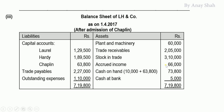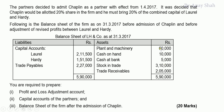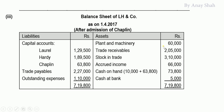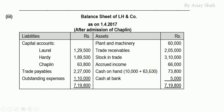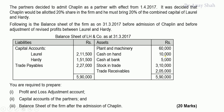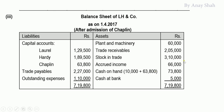Plant and machinery from old balance sheet = 60,000, carried as-is to new balance sheet. Cash balance from old balance sheet = 10,000 plus 63,800 from new partner's capital contribution. Bank balance = 5,000; stock = 3,10,000; debtors = 2,500 — all carried as-is. Balance sheet total = 7,19,800.